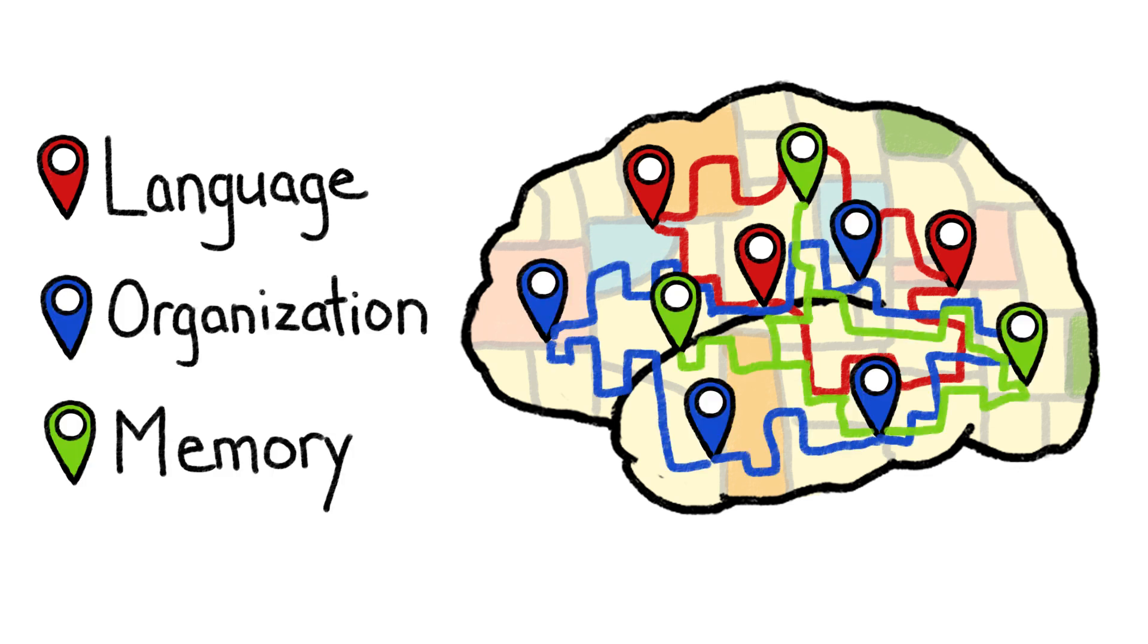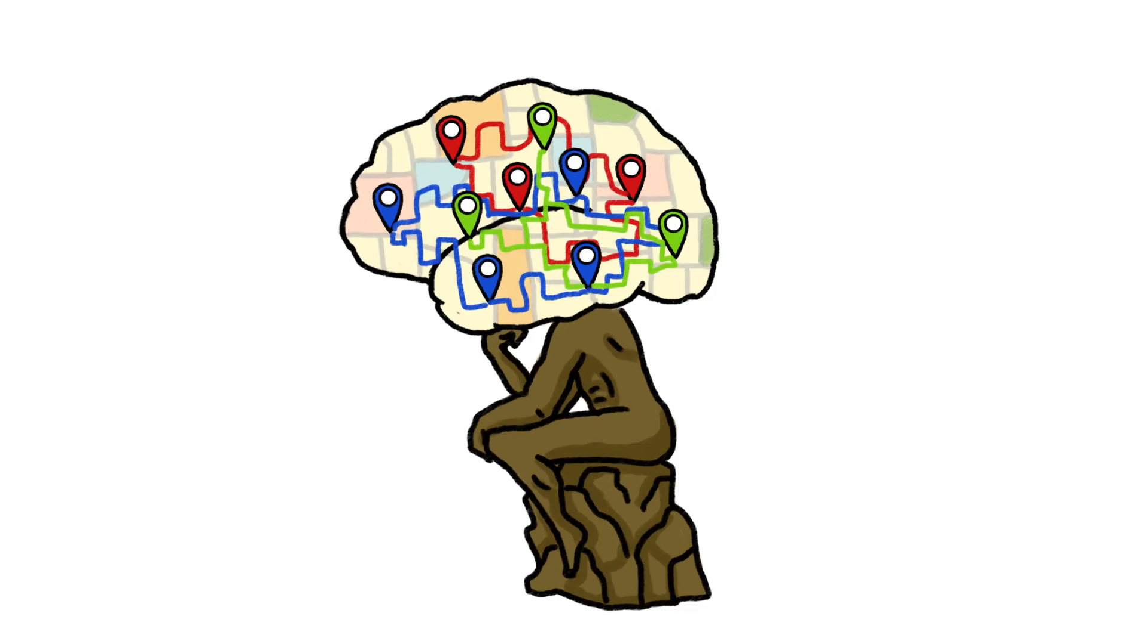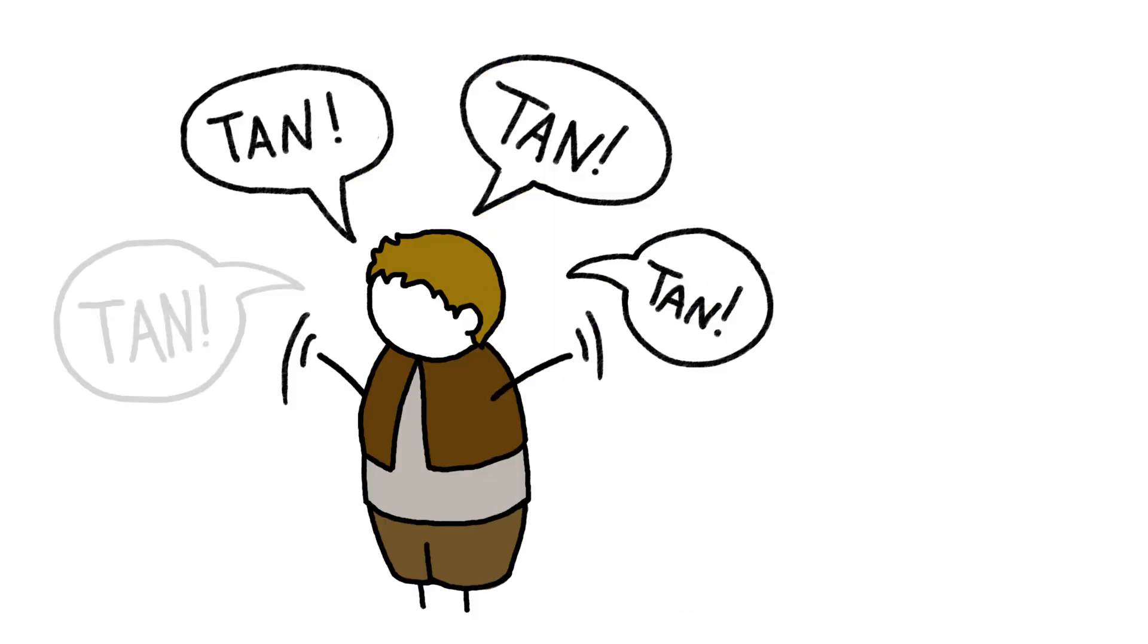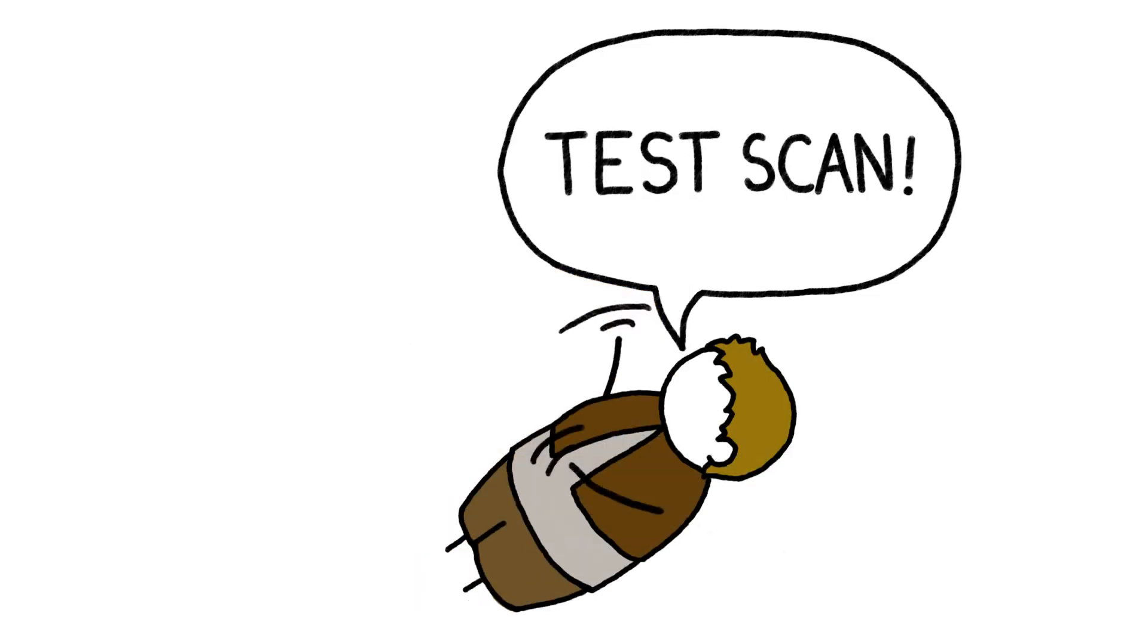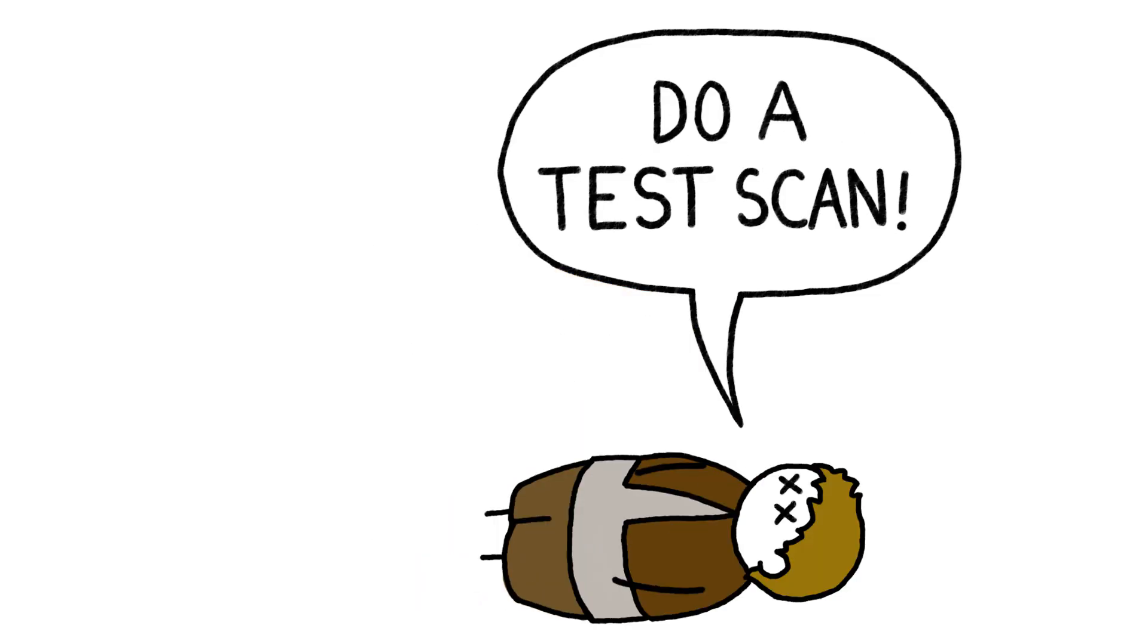But even with these maps, our own brains can still give us a lot to ponder. We may never know, for example, why Broca's patient could only say tan, or whether there was something else he was trying to tell us.